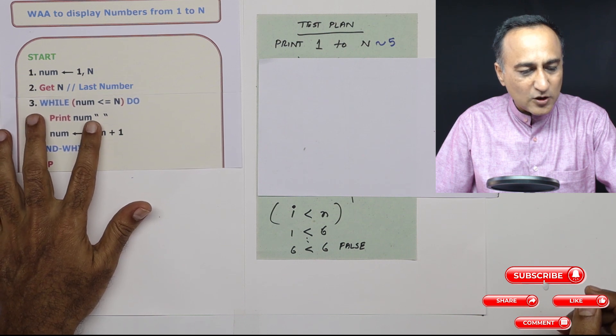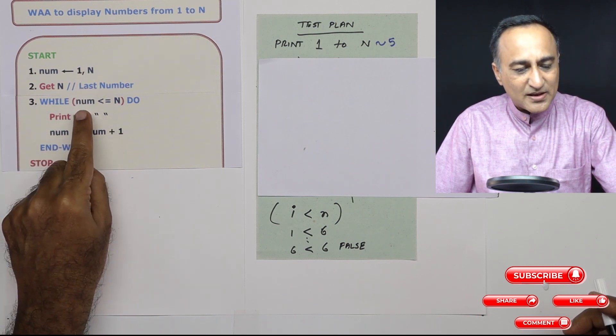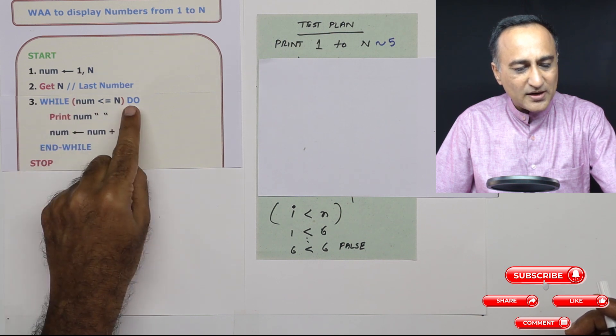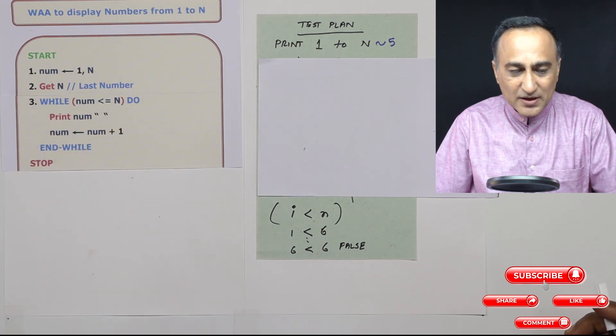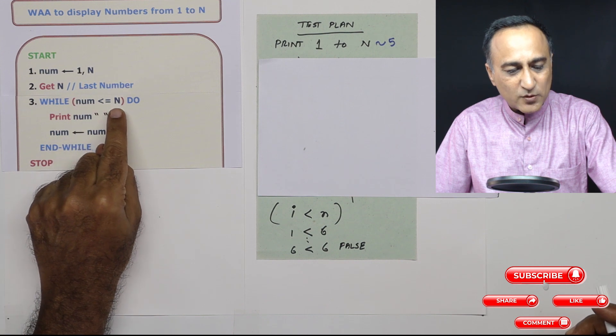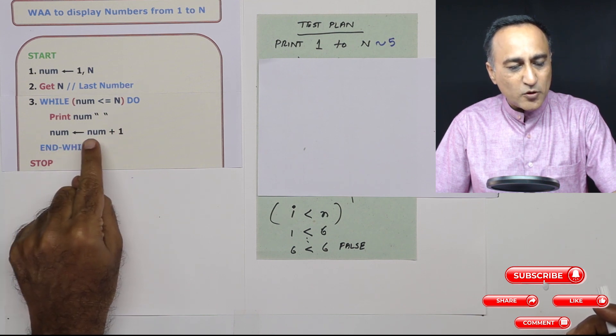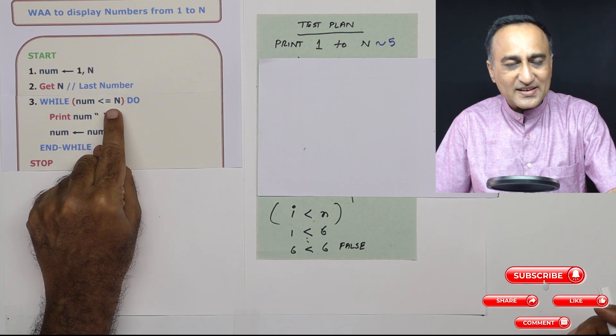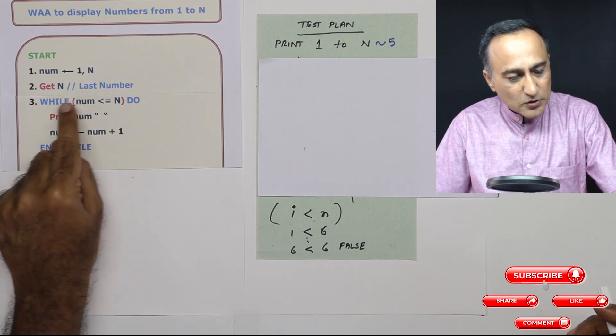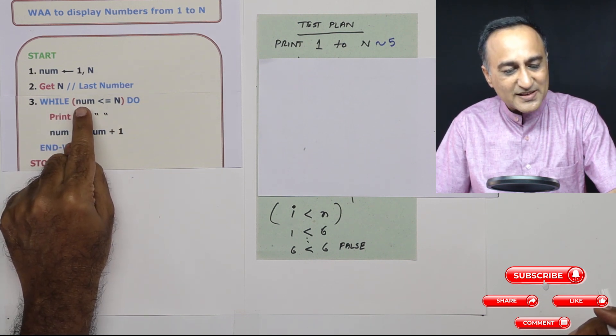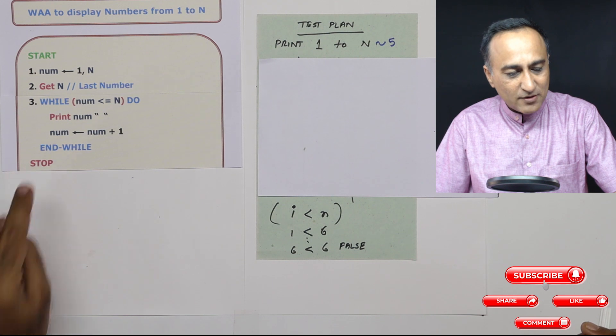So if you take a look at this logic, what I have done here is in step number three, num is initially one, let us say n is just 10. One is less than or equal to 10 while do. So between this while and end while whatever statements are there are executed again and again as long as number is less than or equal to n. So I am going to print number, I am going to print one and then a space after one. Then I am going to make number as one plus one, two. Two is still less than n, print two and then a space, number becomes three. So this process keeps repeating till the value of number becomes 11. When number becomes 11, 11 is not less than or equal to n, then I will come back and stop here.